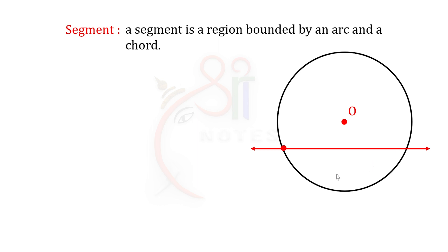The chord meets the circle at point A and point B. The circle is divided into two parts by this chord. Each part is called a segment. In most cases, we need to find the area of a segment.